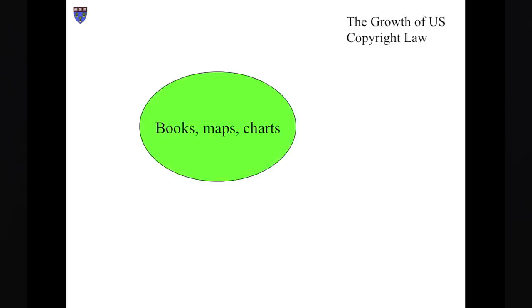I'll begin with a brief overview of the history of the subject matter coverage of copyright, then start over and examine each of the sectors in more detail. US copyright law originates in a 1790 federal statute. Only three kinds of works were protected under the original statute: books, maps, and charts.